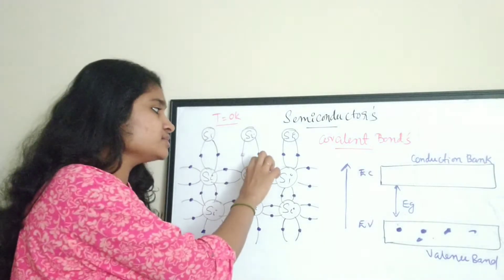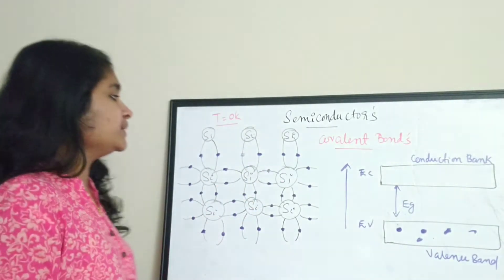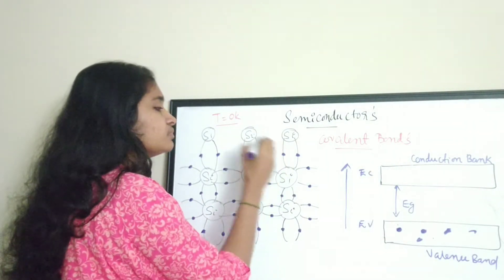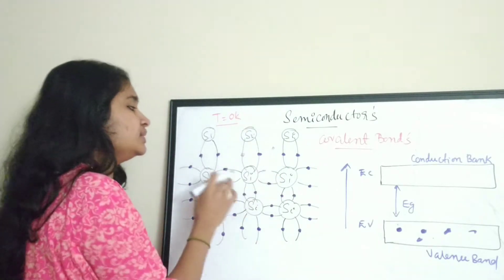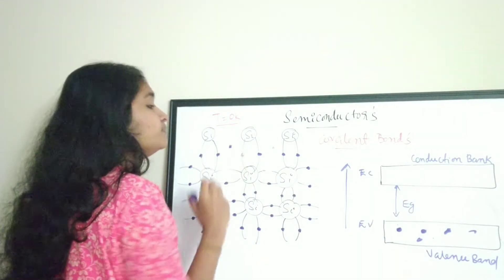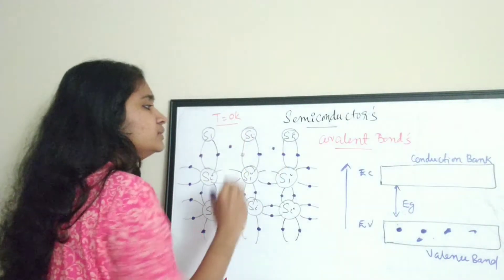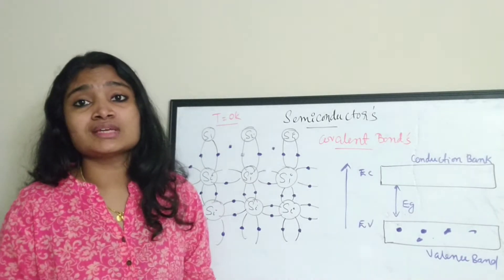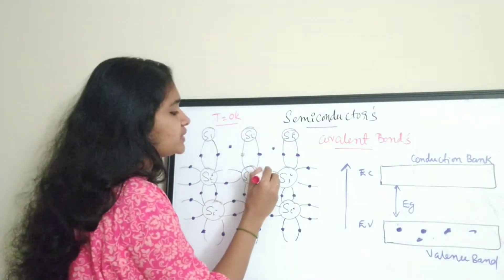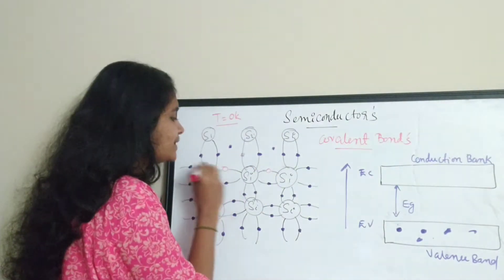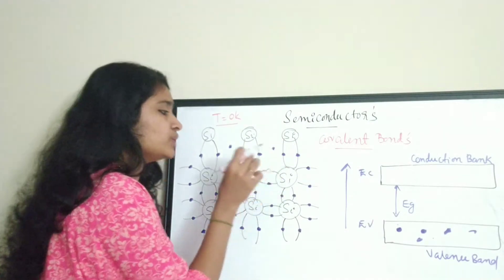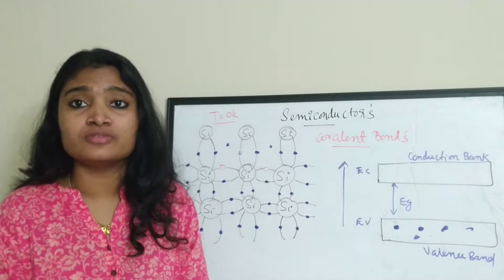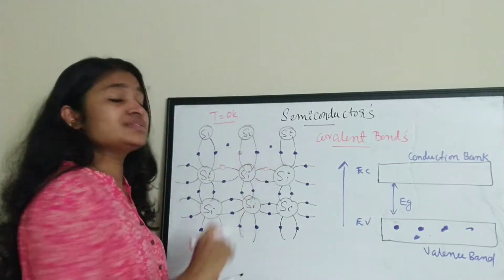When the temperature is increased, electrons have a tendency to break their covalent bonds and become free electrons. These free electrons break the bond and act as free carriers. Similarly, other electrons also have a tendency to break their covalent bonds. When these electrons break the bond they create a free space or vacancy in the bonding.